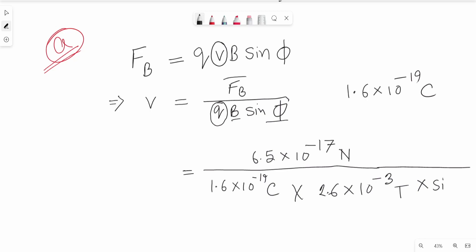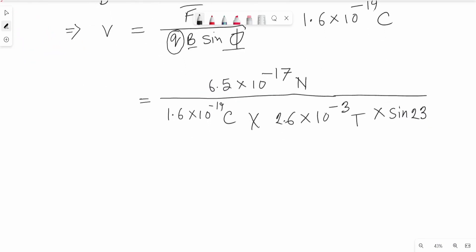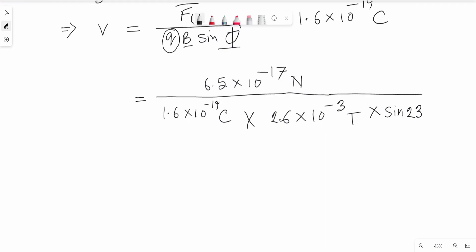and sin phi is sin 23 degrees. After calculation we get 4 into 10 to the power 5. So the proton's speed is 4 times 10 to the power 5 meter per second.